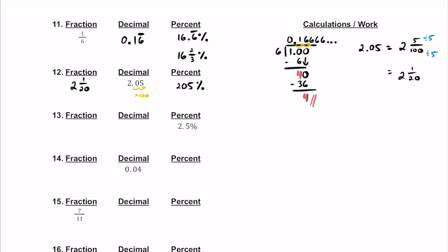For number 13, we have 2.5%. We can have decimals inside of percents. Let's make it a decimal first. To do that, let's divide it by 100 — move the decimal twice to the left. If we do that, we're going to have to add a 0 and write 0.025. Now, how do we read this decimal?